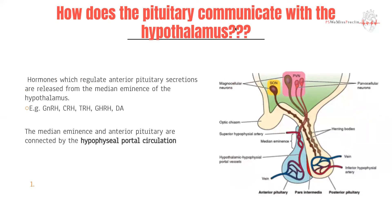How does the pituitary communicate with the hypothalamus? It does this through two ways. The posterior pituitary has a direct connection to the forebrain, which is why much of the transmission between the hypothalamus and the posterior pituitary is nervous in origin — the nervous tissue runs directly through it, with vasculature to get hormones out. The anterior pituitary does not have a direct connection and therefore communicates with the hypothalamus primarily through hypothalamic hormones circulating via the hypothalamic-hypophyseal portal vessel.